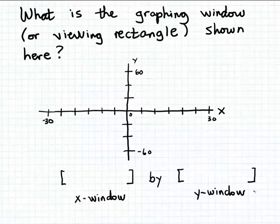In this example, we're asked to describe the graphing window, also known as the viewing rectangle, shown on this rectangular coordinate system, or Cartesian coordinate system.